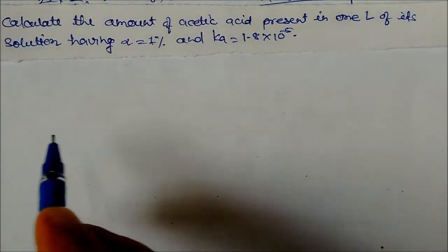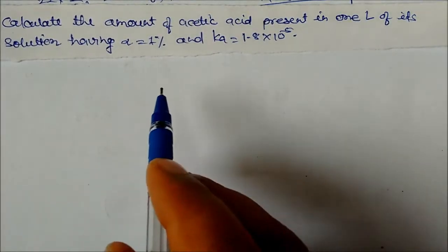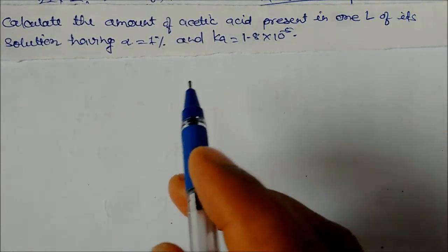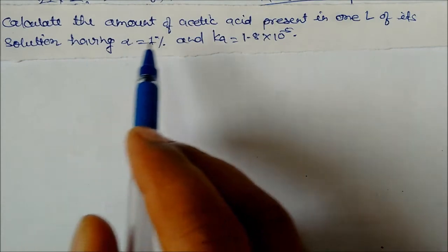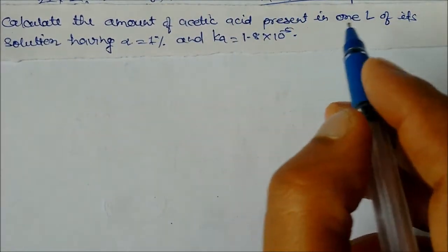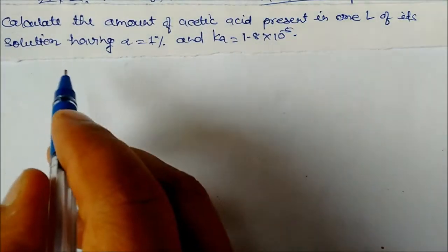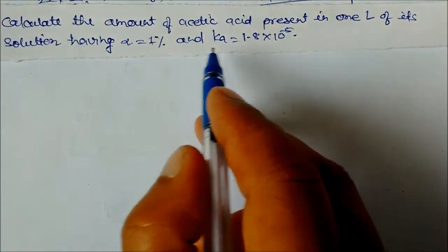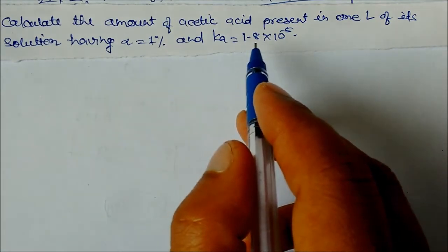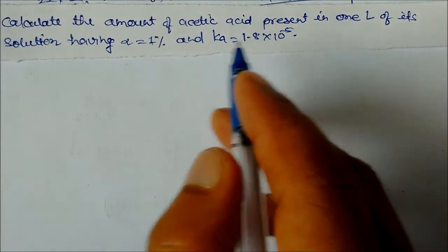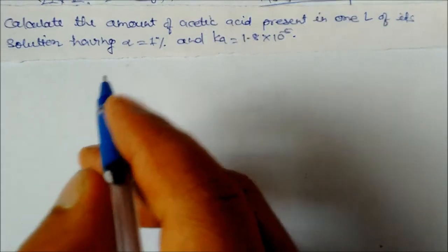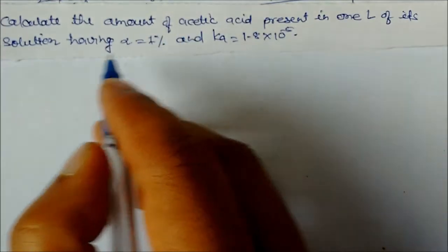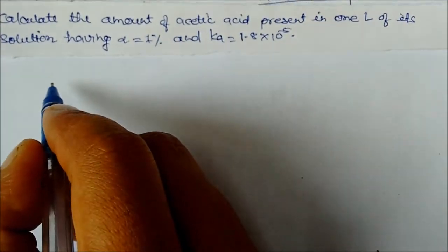Now we see the problem based on dissociation of the weak acid or weak base. Calculate the amount of acetic acid present in 1 liter of its solution having alpha equal to 1% and Ka equal to 1.8×10⁻⁵. The dissociation constant of the acid has been given. We need to find how much amount of acetic acid will be required.